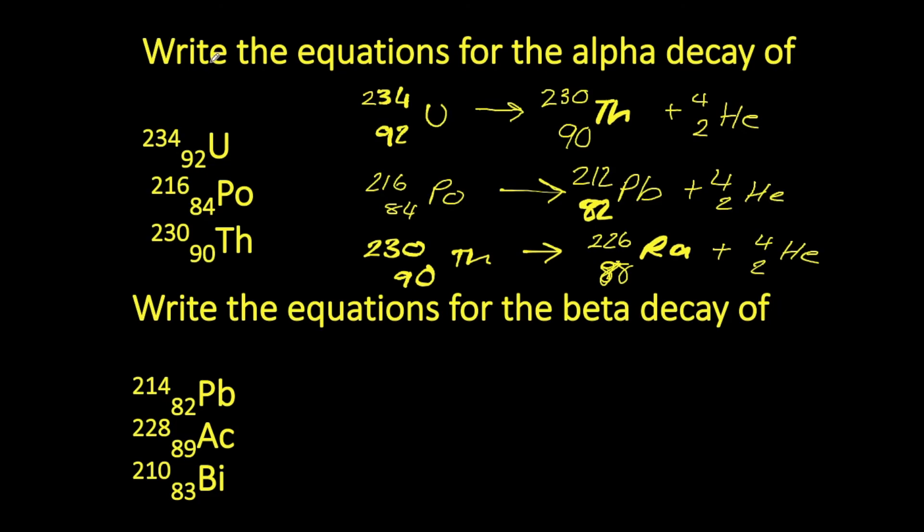Now on to the beta decay. So we start with lead. Now it undergoes beta decay. It will produce an electron and an atom with the mass 214. Remember our mass remains unchanged during beta decay. And our atomic number increases by 1. So the atomic number will be 83. That means that we have produced the atom bismuth.